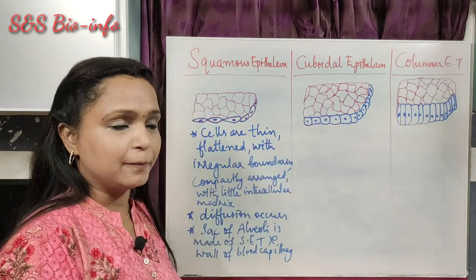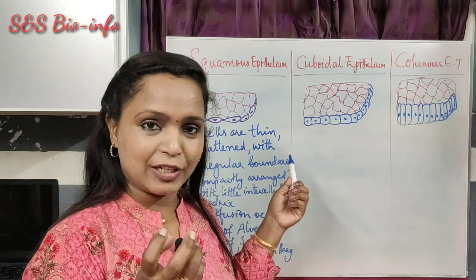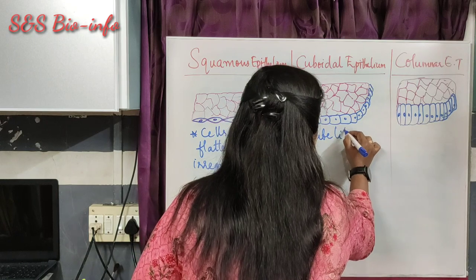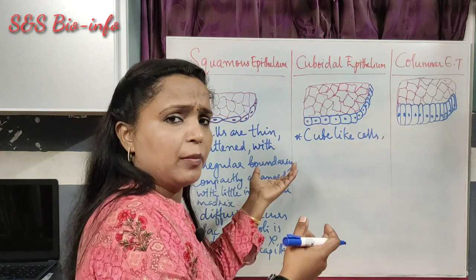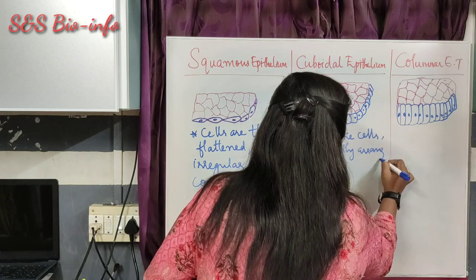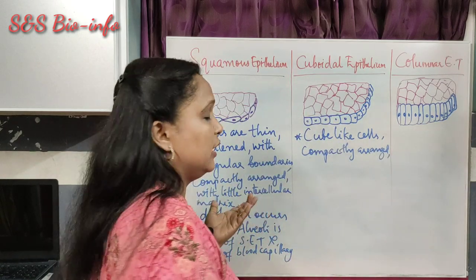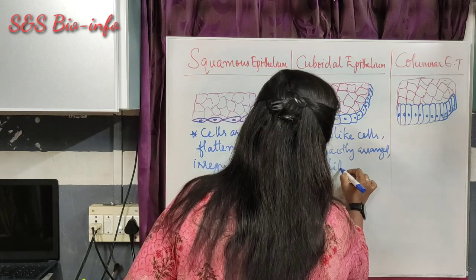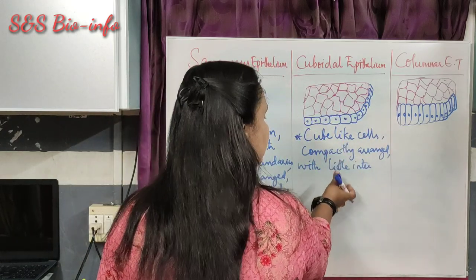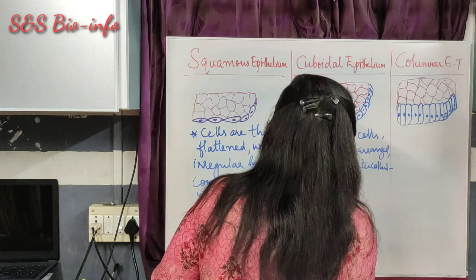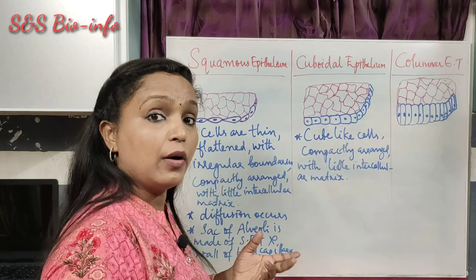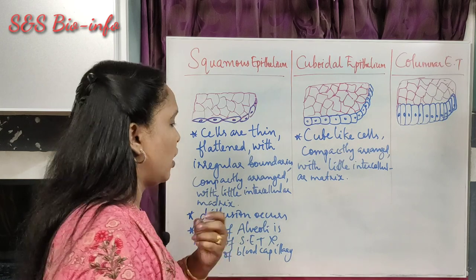Next, let us study cuboidal epithelium. Looking at the diagram, the cells are cube-like with regular boundaries, compactly arranged with little intercellular matrix — which is common for all types of simple epithelial tissue. These cuboidal epithelial tissues are found in areas where secretion and absorption occur in the body.